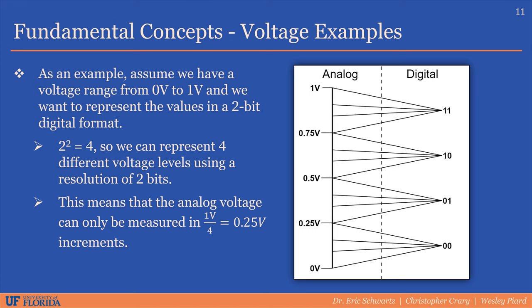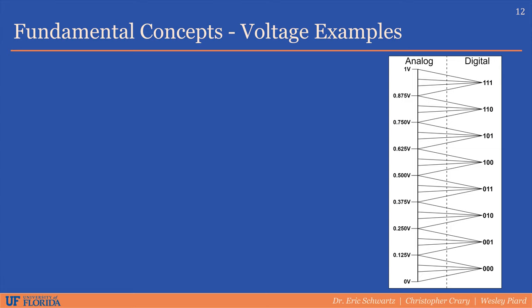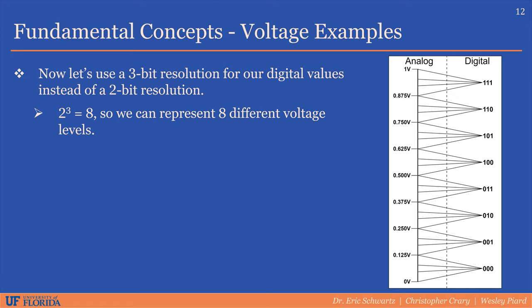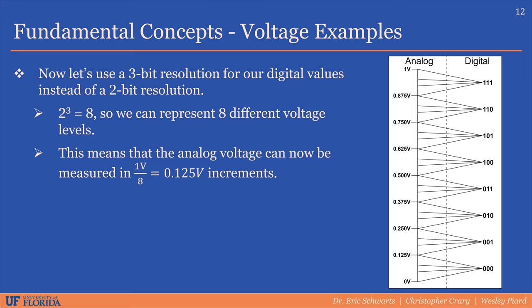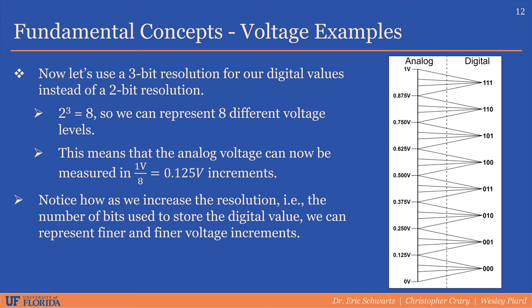Any voltage measured between 0 and 1 volt can be mapped to one of these 4 binary values. For example, the binary value 00 corresponds to 0 volts, and 11 corresponds to 1 volt. Using 3-bit resolution instead of 2, we can represent 8 different voltage levels, detecting increments of 0.125 volts in the analog domain. The higher the number of bits, the higher the resolution of the ADC and the finer the voltage change we can detect. 2 and 3-bit ADCs are shown for illustration — a more common resolution is 12 bits.